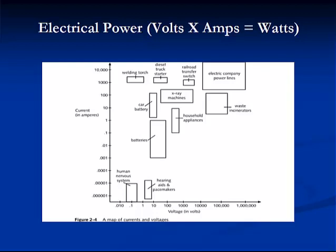Electrical power in a circuit is a multiple of its current and voltage — in other words, voltage times current equals power. Note the differences in power requirements for various electrical devices.